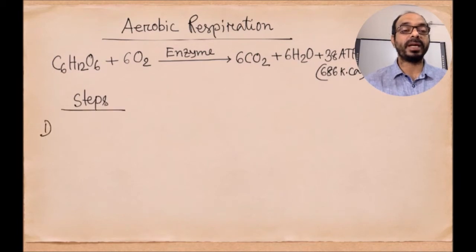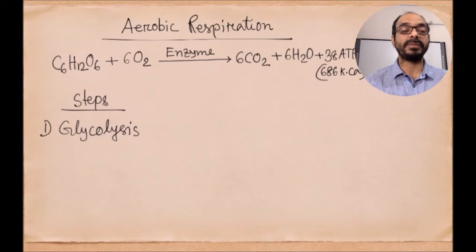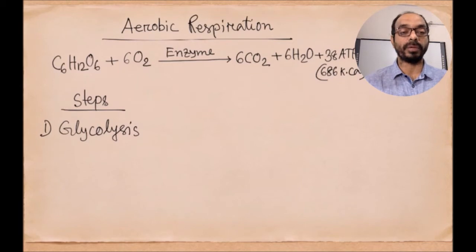There are mainly four steps of aerobic respiration. The first step is glycolysis, in which one molecule of glucose is converted into two molecules of pyruvic acid. Glucose is a six-carbon compound and pyruvic acid is a three-carbon compound, so one six-carbon compound produces two three-carbon compounds.